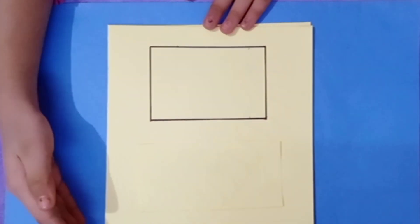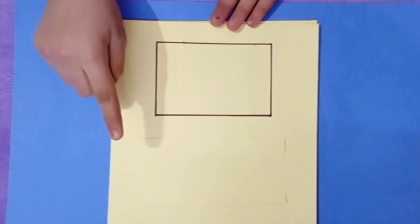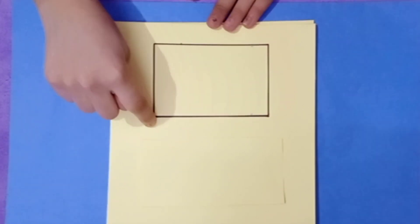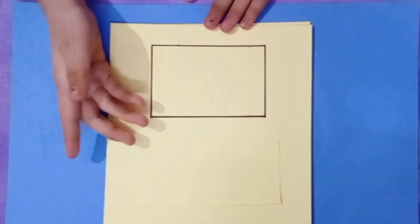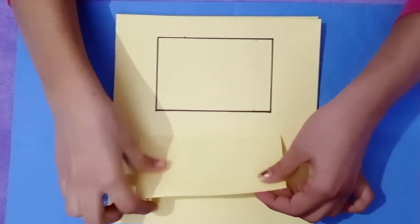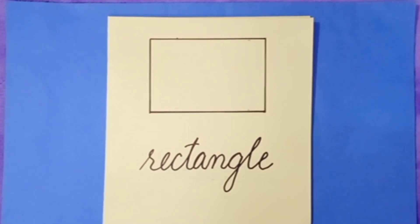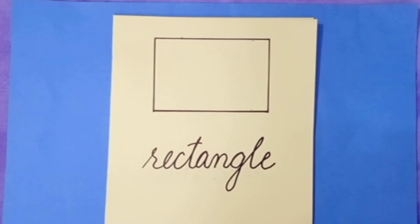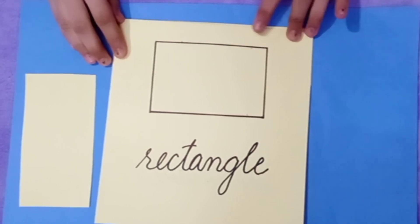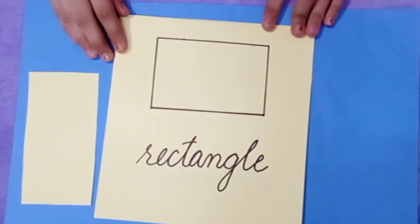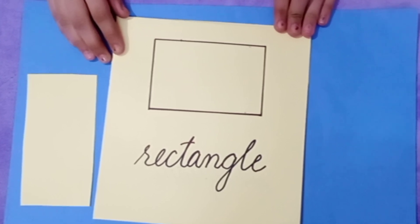What shape is this? What's the name of this shape? It has four corners and four sides. This is a rectangle. Yes, dear students, this is a rectangle. A rectangle has four sides and four corners — corners means angles. So a rectangle has four angles.